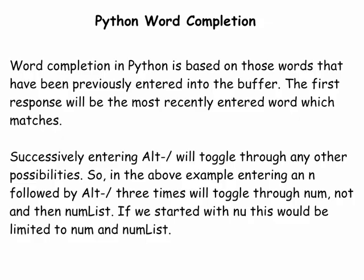Word completion in Python is based upon those words that have been previously entered into the buffer. The first response will be the most recently entered word which matches. Successively entering alt slash will toggle through any other possibilities. So in the above example, entering an N followed by alt slash three times will toggle through num, not, and then finally num_list.